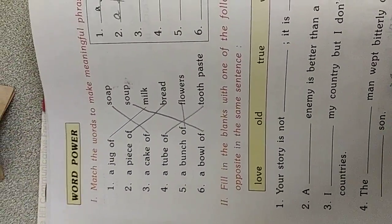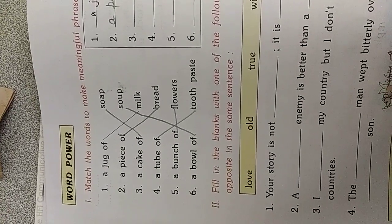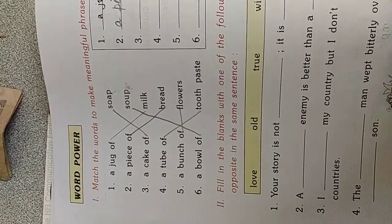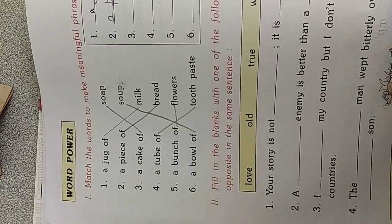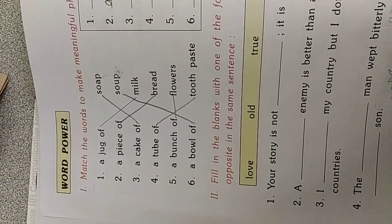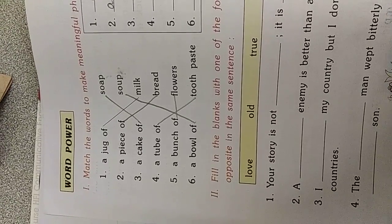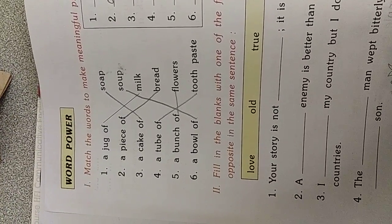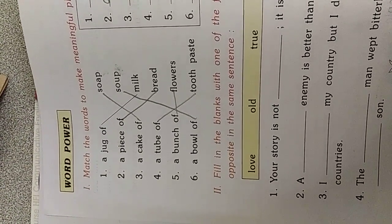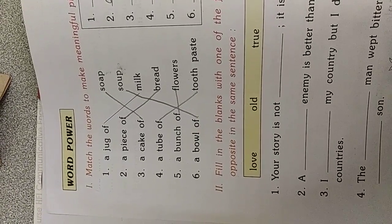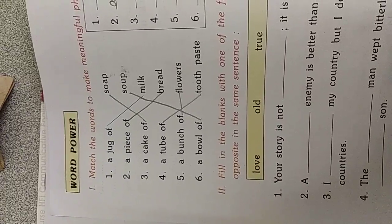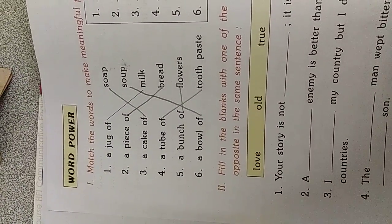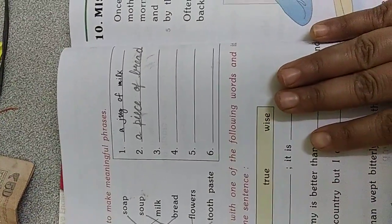Word power. This we have to join the sentences as match the following. A cup of milk. A piece of bread. A cake of soap. A tube of toothpaste. A bunch of flowers. A bowl of soup. So, this we have to write in the form of sentences in this way.